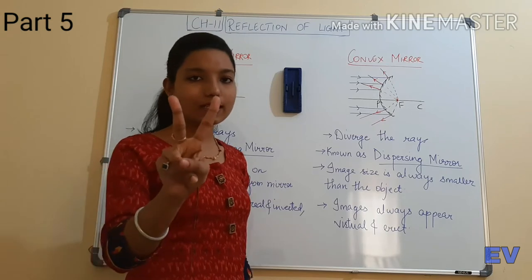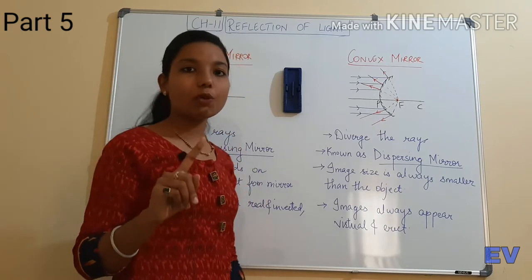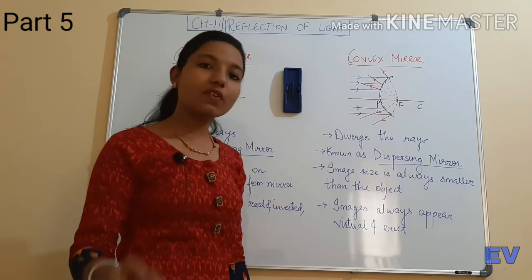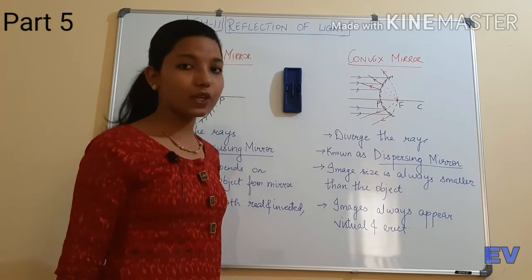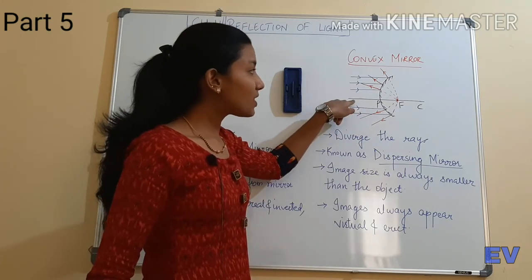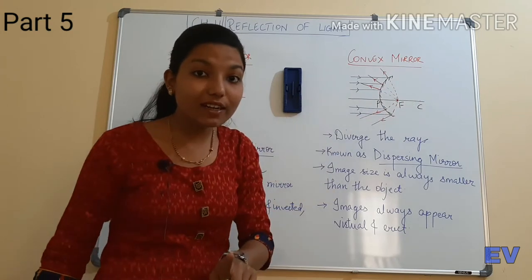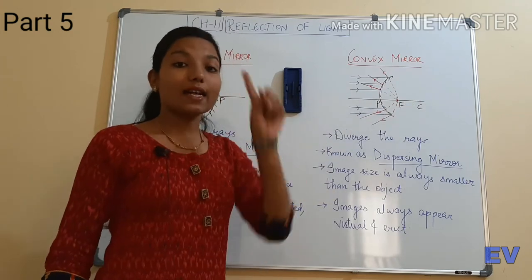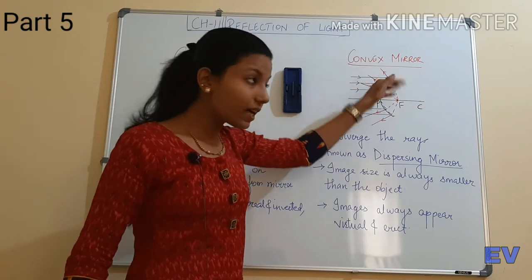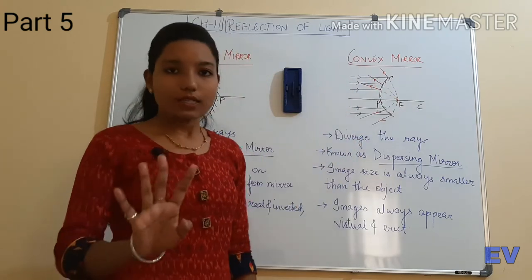The convex mirror has only two cases of image formation. I have told you in the last video — if you want, comment on my videos and I will make a video on convex mirror image formation. So, parallel to the principal axis, the ray will reflect. The reflected ray, when we extend behind the mirror, should intersect with the focus.